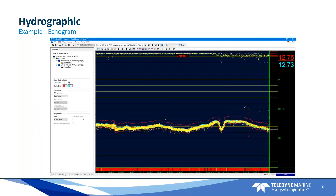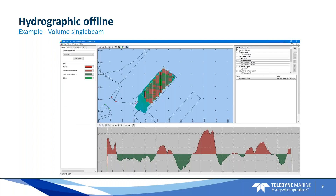We also offer offline tools. For single-beam survey, we have a volume utility: you create a grid model, set a design model, and then compute the volume above and below the design model. The same applies for multi-beam — we have a multi-beam calibration utility to calibrate roll, pitch, and angles.